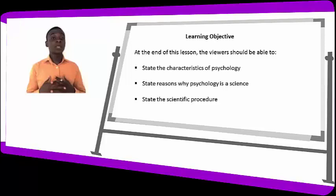Number one is to look at the characteristics of psychology. We are also looking at the reasons why psychology is a science, and we also want to look at the scientific procedure.